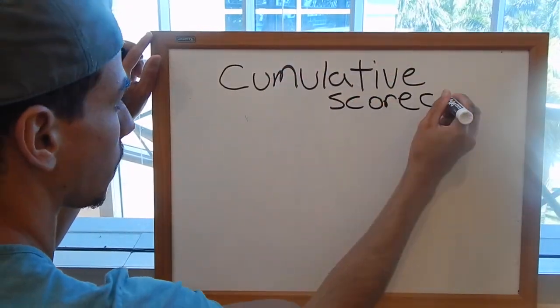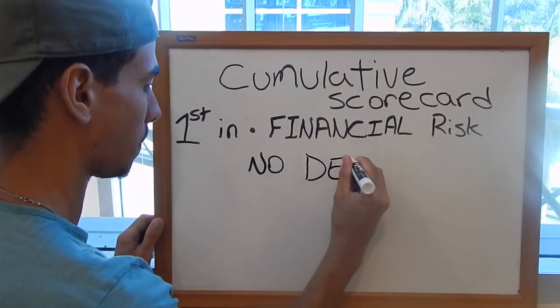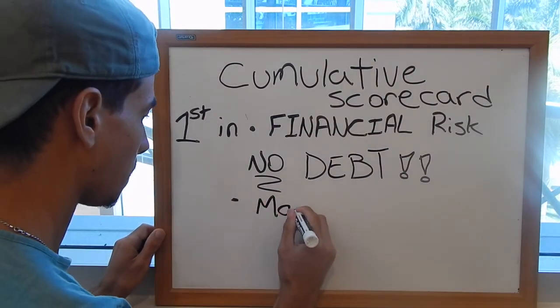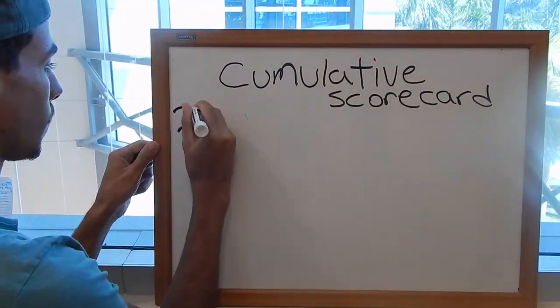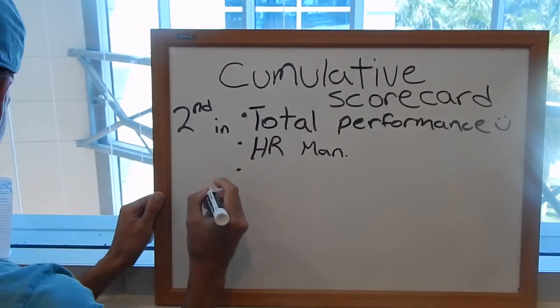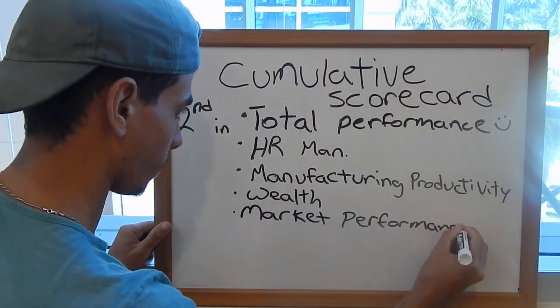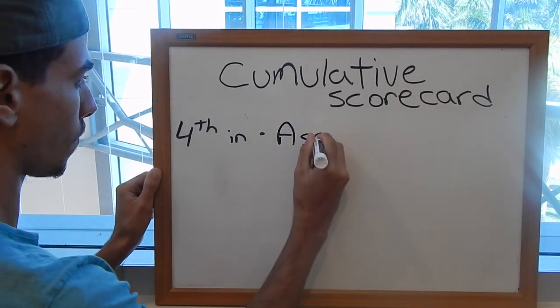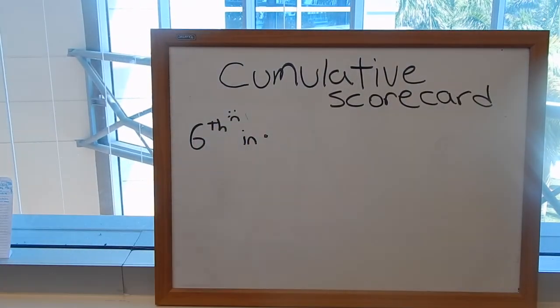According to the cumulative scorecard, we came out in first for financial risk. We have incurred zero debt throughout the whole simulation. We also managed to be first in marketing effectiveness. We were second in total performance, HR management, manufacturing productivity, wealth, market performance, and financial performance. We were fourth in asset management, and unfortunately sixth in investment in future.